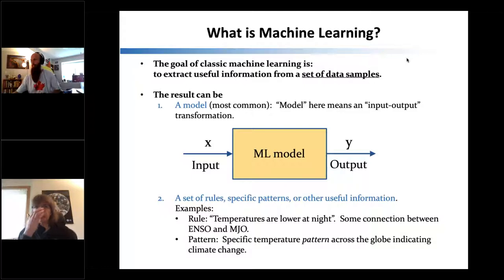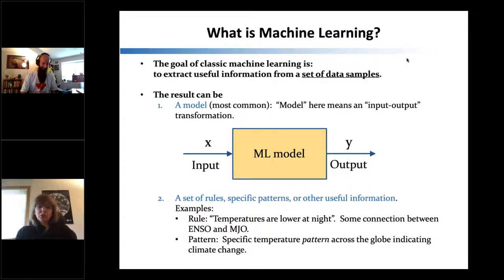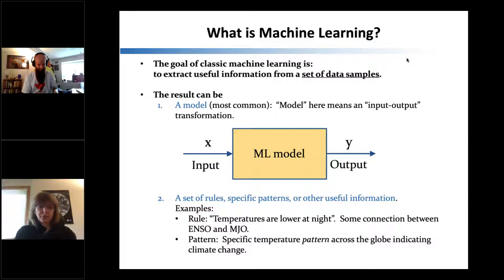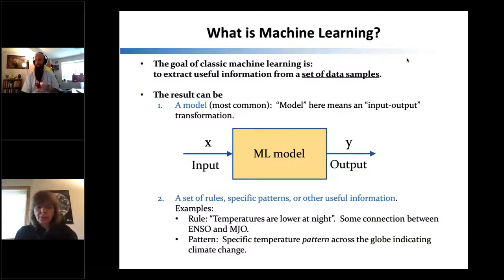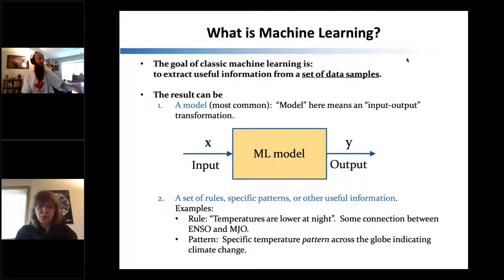The simplest example is a linear regression model. You train it on input-output vectors and come up with a linear regression model. The machine learning model is just a generalization of that basic principle. Another outcome of machine learning can be a set of rules, such as temperatures are low at night, or some connection between ENSO and MJO. You can extract rules like that from data.